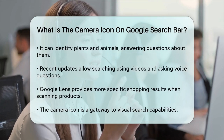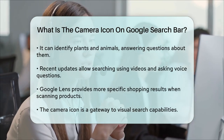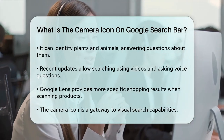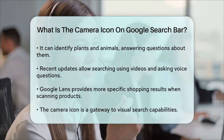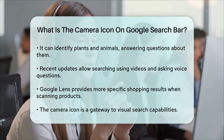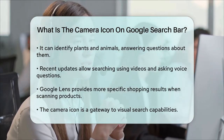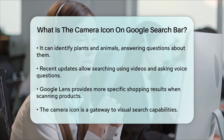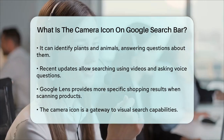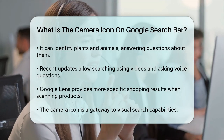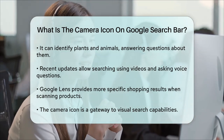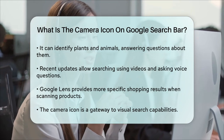It's also great for identifying plants and animals. So if you're curious about a flower in your friend's apartment or a dog you saw in the park, Google Lens has the answer. In recent updates, Google Lens has become even more powerful — you can now search using videos, ask voice questions about the things you're scanning, and get more specific shopping results if you scan a product.